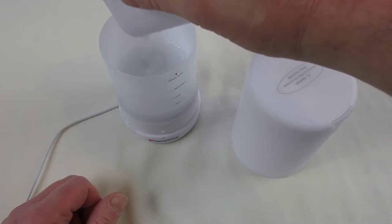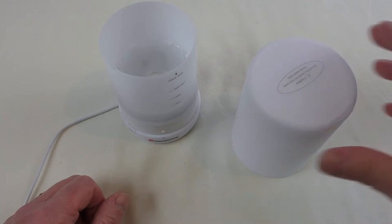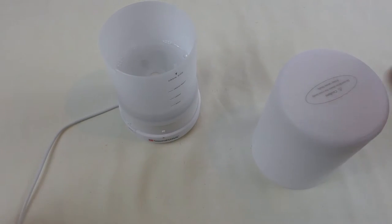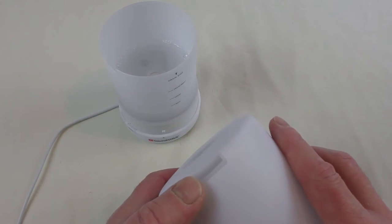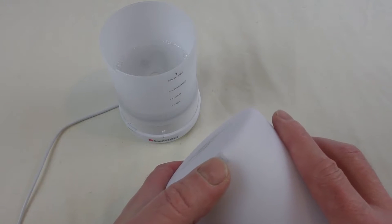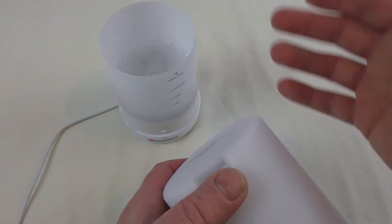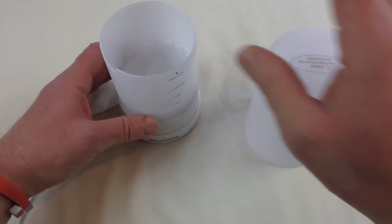And we're just going to pour that in there as per instructions. Now one thing about this by the way is this is the vent for the mist and then there's an air vent around the back.